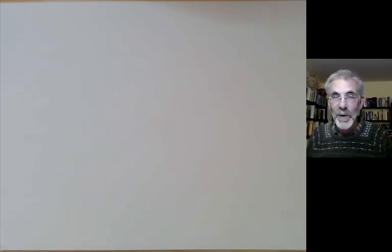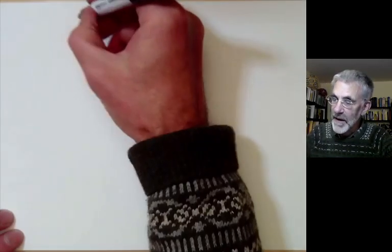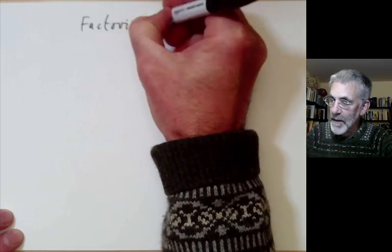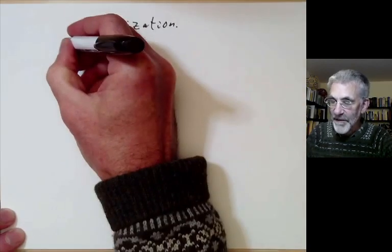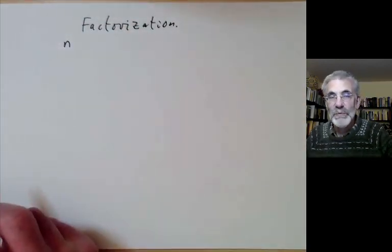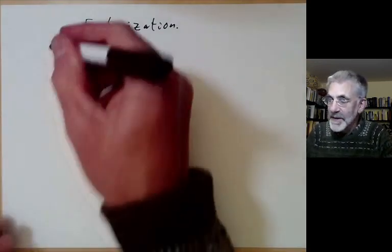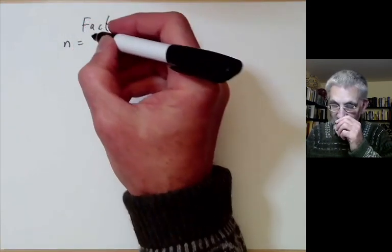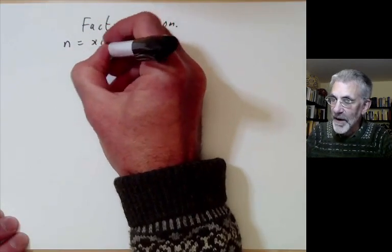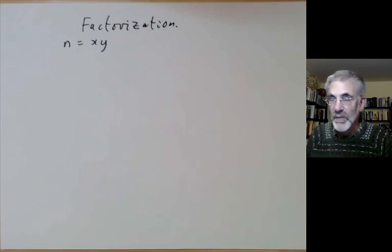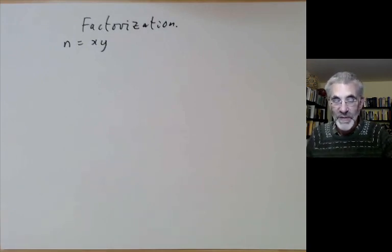This lecture is part of Berkeley Math 115, an introductory undergraduate course on number theory, and it will be about factorization. The problem is we're given a number n, and we know or suspect for some reason that it's not a prime, so we want to factorize it as a product of two numbers, x and y. In practice, n might be really large, it might have say 100 digits or something like that.